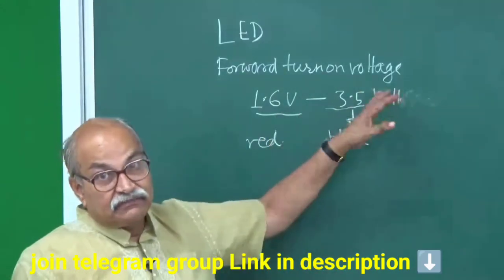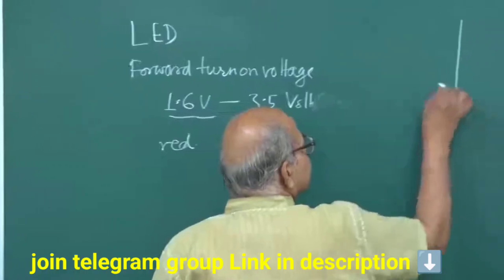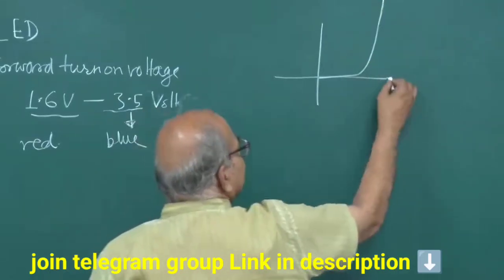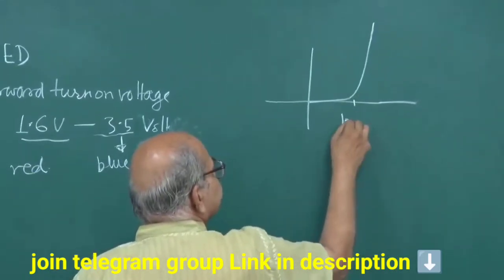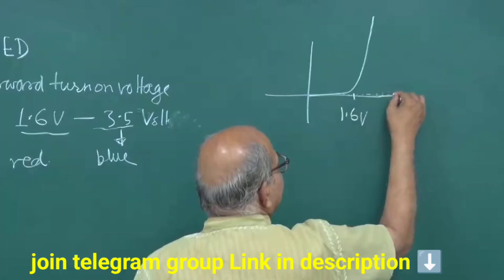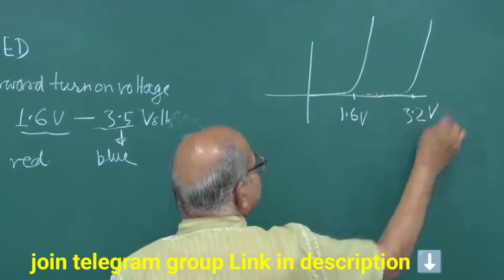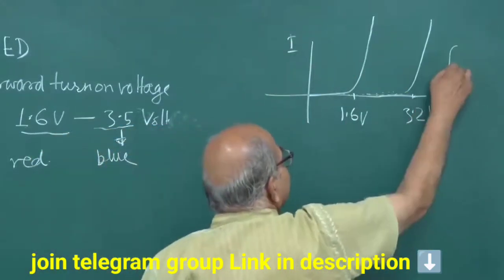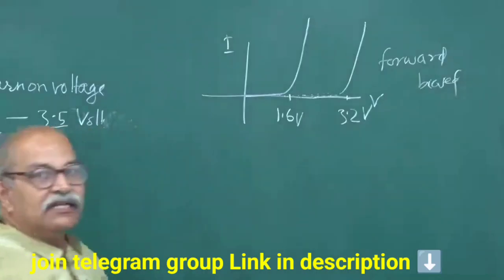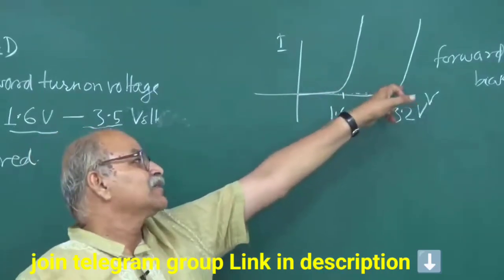You should not give too much voltage after the forward turn-on because you know the diode characteristics. In forward bias it increases very suddenly. If this is let us say 1.6 volts and the other is around 3 to 3.2 volts, you can easily make out that one IV characteristic curve is for red and the other is for blue.